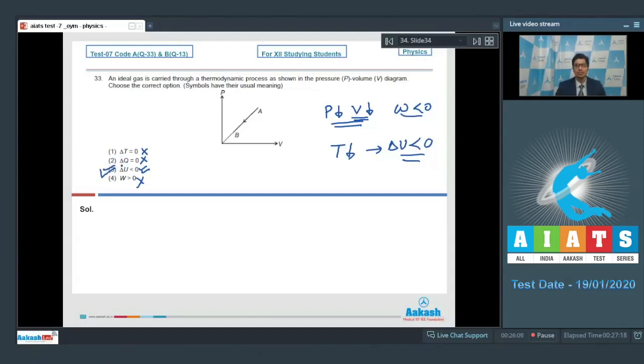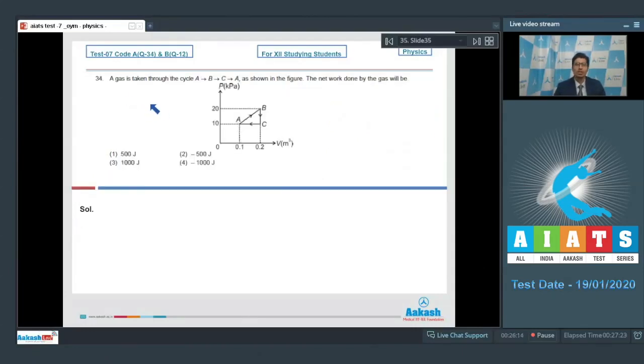Now let us discuss question number 34. Question 34 says a gas is taken through cycle A to B to C to A as shown in the figure. The net work done by the gas will be. The work done is area of the PV diagram. Therefore, we have to find out this particular area.